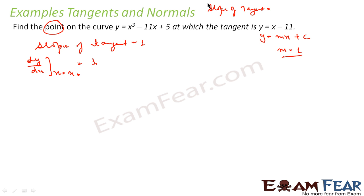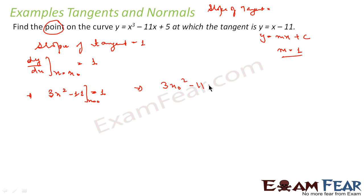So if my equation is y = x³ - 11x + 5, my dy/dx is nothing but 3x² - 11. This equals 1 at x = x₀. So putting x = x₀: 3x₀² - 11 = 1, which gives x₀² = 12/3 = 4, so x₀ = ±2.